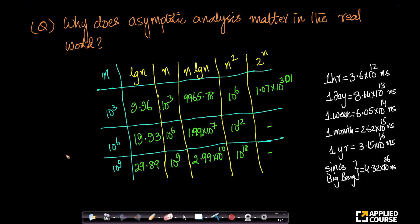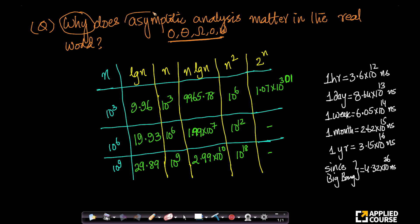Why does asymptotic analysis actually matter in the real world? We learned all these notations like big O, big theta, big omega, small O, small omega, all of these. But the more fundamental question is why. Why does all of this matter in the real world? I will give you a very simple explanation so that you are convinced that asymptotic analysis is one of the most important concepts when you are designing any algorithm.